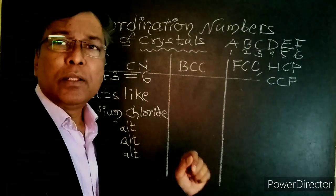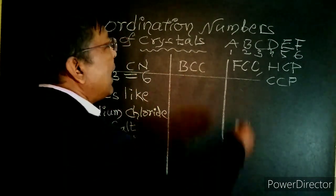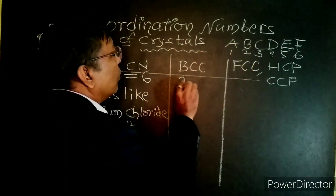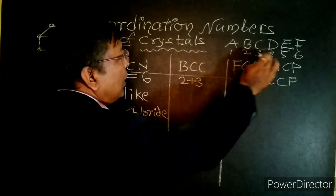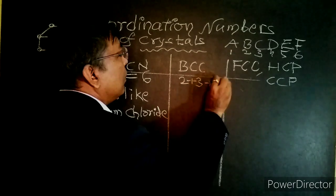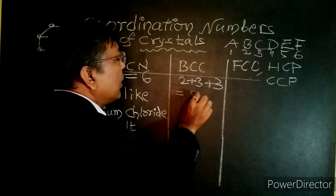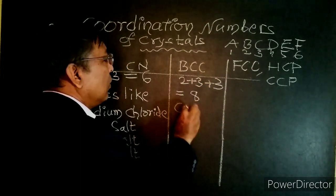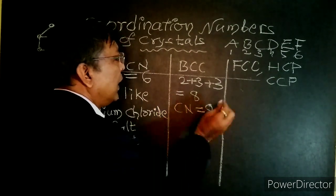Now let us find the coordination number of BCC. The value of B is 2, and the value of C is 3, and another C is 3. Total the sum becomes 8. Therefore the coordination number of BCC is 8.